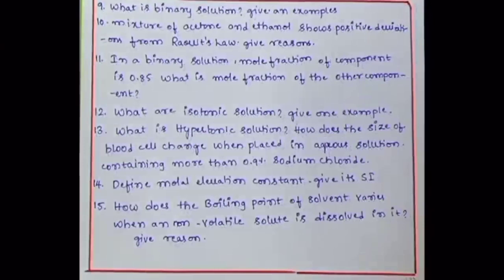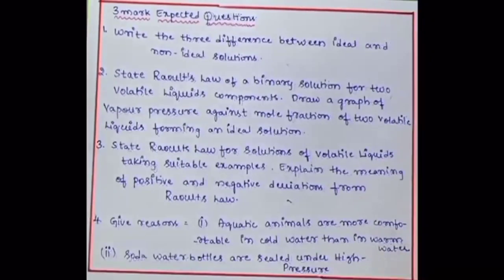Define molal elevation constant and give its SI unit. How does the boiling point of the solvent vary when a non-volatile solute is dissolved in it? Give reason. Three marks questions: Write the difference between ideal and non-ideal solution. State Raoult's law for a binary solution for two volatile liquid components, draw a graph of vapor pressure against mole fraction. State Raoult's law for solution of volatile liquids, taking suitable examples and explain the meaning of positive and negative deviation from Raoult's law.